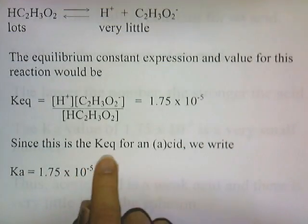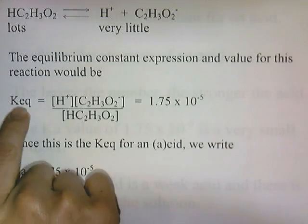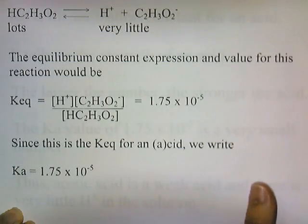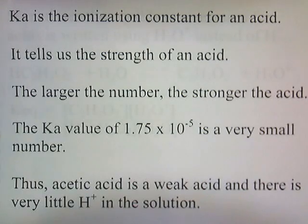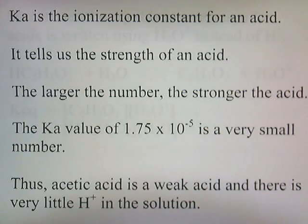Now since this is the equilibrium constant for an acid, we write KA instead of KEQ. KA is just a specialized equilibrium constant — it's the equilibrium constant for an acid. KA is the ionization constant for an acid; it tells us the strength of the acid. The larger the number, the stronger the acid. Now the KA value of 1.75 times 10 to the negative fifth is a very small number, so acetic acid is a weak acid, and there's very little H+ in the solution.